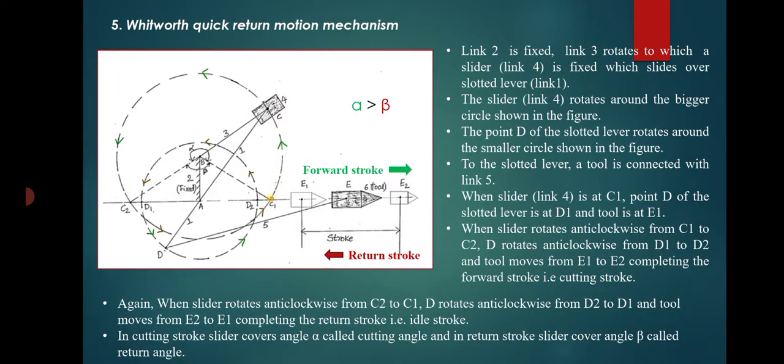Next is the Whitworth quick return mechanism. This is similar to the slotted lever quick return mechanism. In this mechanism, link 2 is fixed. Link 3 rotates, to which the slider — link 4 — is fixed, and the slider slides over the slotted lever — link 1.